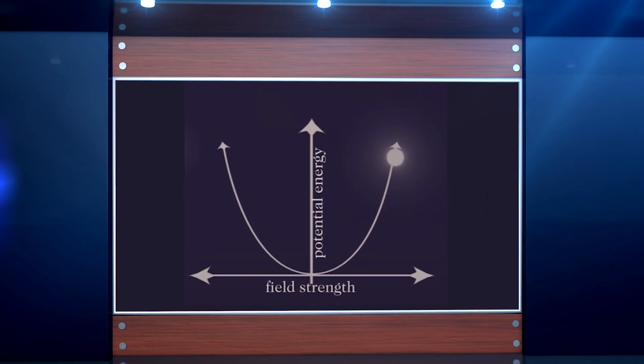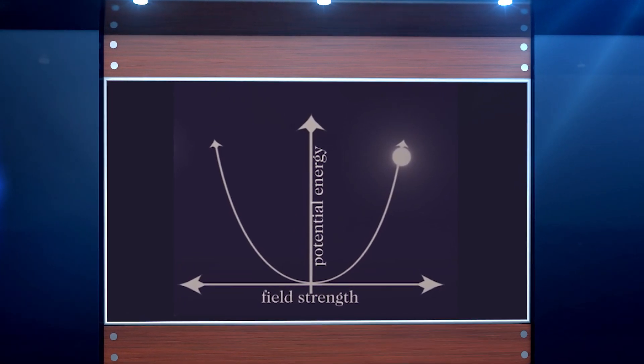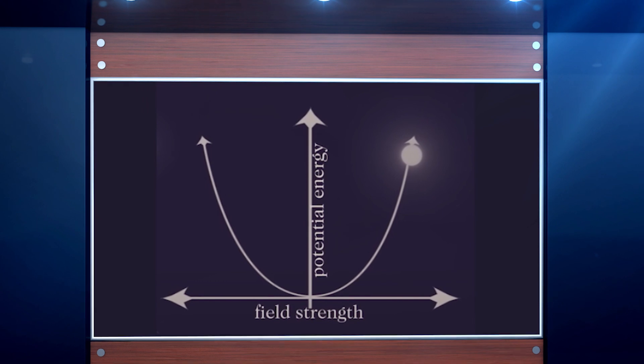If we graph quantum field potential energy versus field strength, it might look like this. If the field finds itself at a high energy state, it would roll to the minimum and stay there.